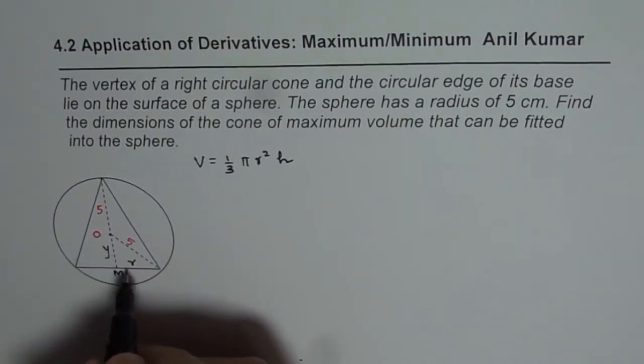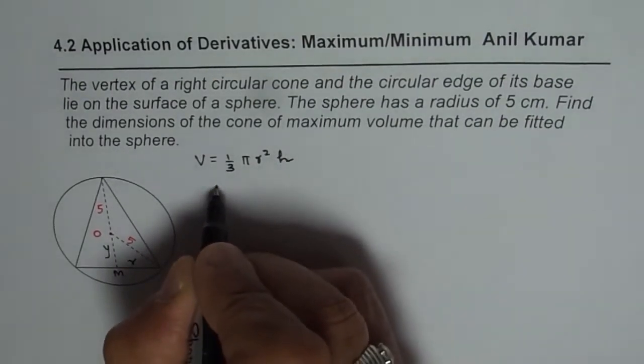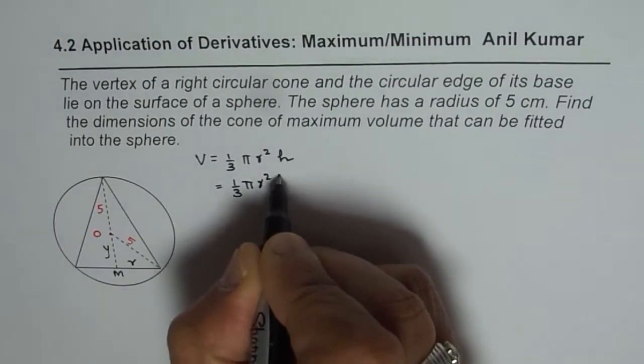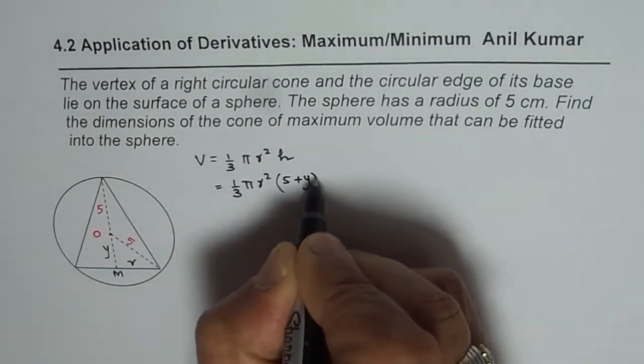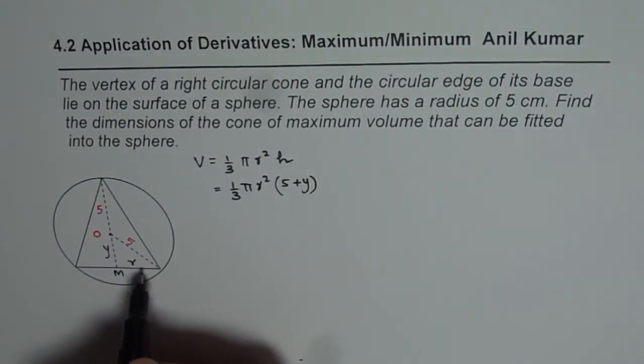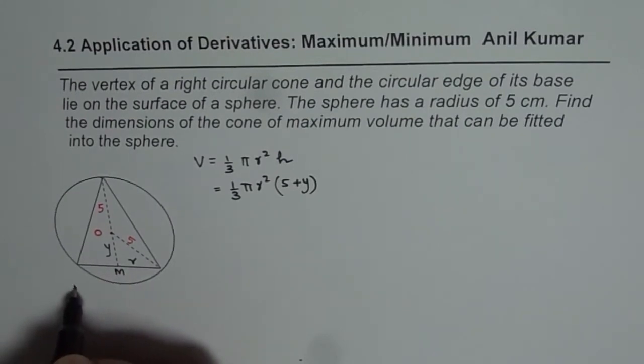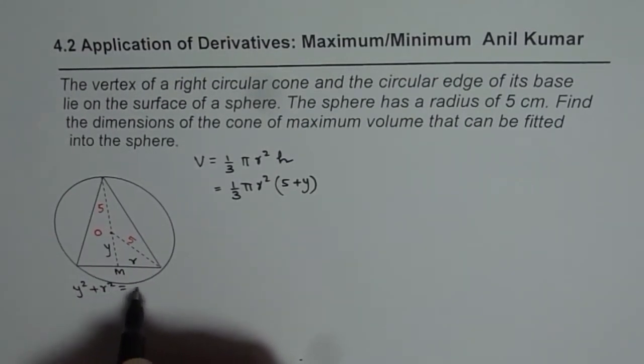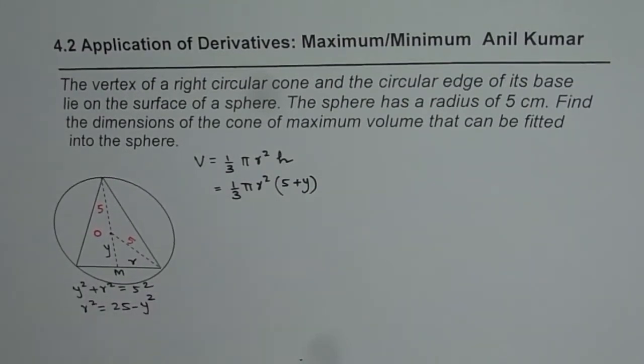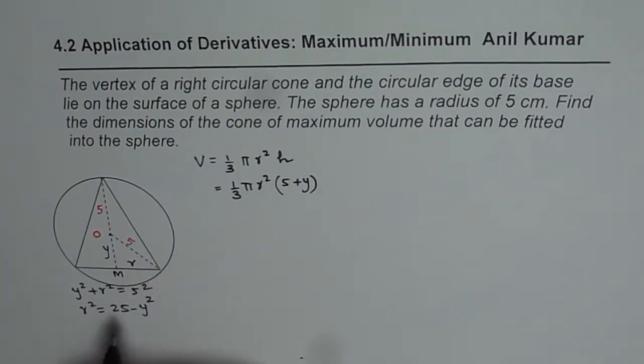So height will be 5 plus y for us. So that is how we can get a relation. But here, what is the relation between r and y? We get a relation which is 1/3 pi r squared and height will be 5 plus y for us. Now how is r and y related? As you can see here, we have a right triangle. So from here, we can say r squared can be written as, let us write it down. So we have y squared plus r squared equals to 5 squared. And so we can say r squared is 25 minus y squared.